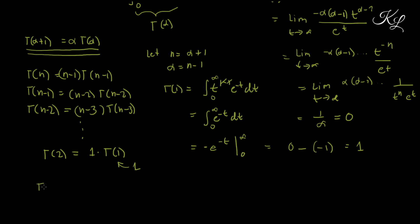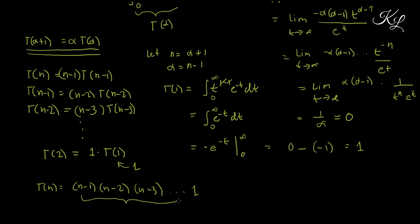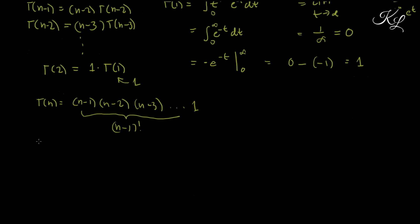Therefore, Γ(n) = (n−1)·Γ(n−1) = (n−1)·(n−2)·Γ(n−2), continuing on down until we reach 1·Γ(1) = 1. Multiplying all these factors together gives (n−1)·(n−2)···2·1, which is (n−1)!. So Γ(n) = (n−1)!. That ends our proof.